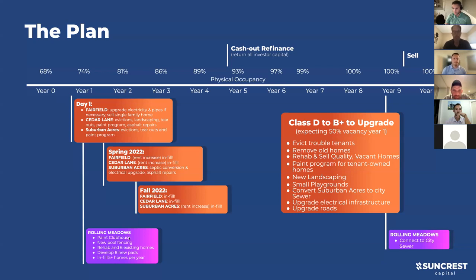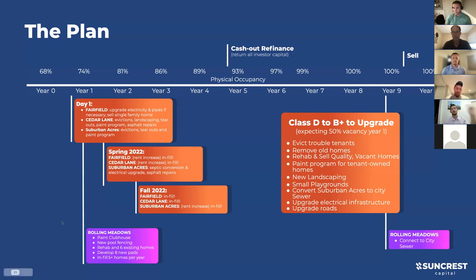For Rolling Meadows, we can paint the clubhouse, add new vinyl pool fencing, rehab and sell a handful of homes in the community, and develop those eight new sites Matt walked through. We're planning to infill five homes a year at Rolling Meadows and about two to five for the rest of the portfolio - seven to ten a year total, less than one a month. Some of those will be brand new homes we don't need to source off of Facebook.